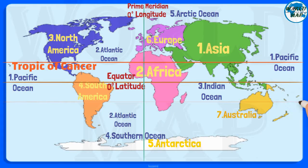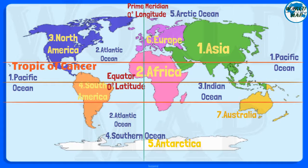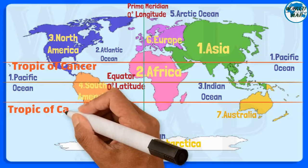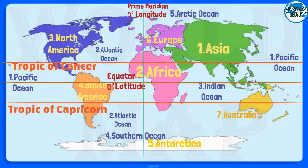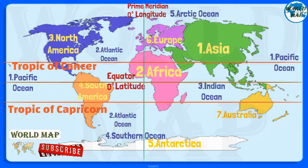Tropic of Capricorn. The Tropic of Capricorn is the circle of latitude that contains the sub-solar point at the December solstice. It is thus the southernmost latitude where the Sun can be seen directly overhead. It also reaches 90 degrees below the horizon at solar midnight on the June solstice.